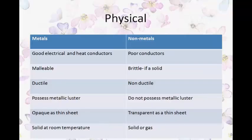If we segregate into physical properties of metals and non-metals: metals are good electrical and heat conductors, they are malleable and ductile, they possess metallic luster, they are opaque as thin sheets, and they are solid at room temperature. Non-metals, on the other hand, are poor conductors, brittle if solid, non-ductile, do not possess any metallic luster, are very transparent as thin sheets, and are solid or gas at room temperature.